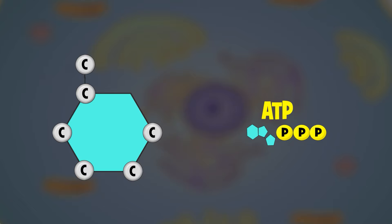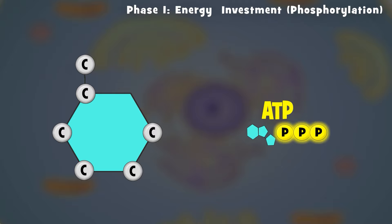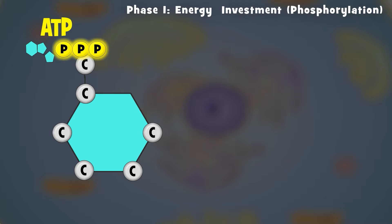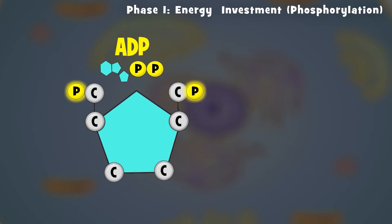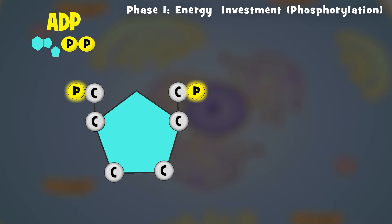Here's how it works. Phase 1: The energy investment phase, or phosphorylation. During this first phase, two molecules of ATP are invested to get the process started. You may have heard the saying it takes money to make money — well, that's what's happening here. It takes a little ATP to kickstart glycolysis and get the process moving. Notice that the ATP molecules transfer their phosphates to glucose, which energizes glucose and makes it unstable so that it will continue to react and get broken down.